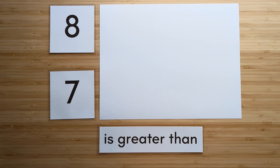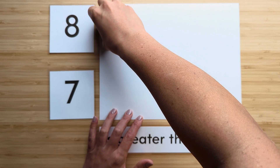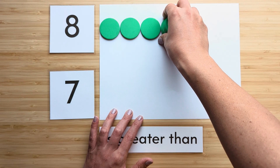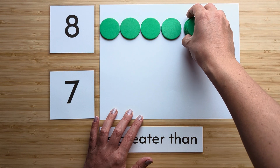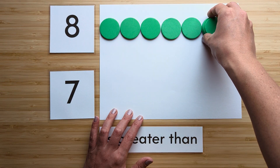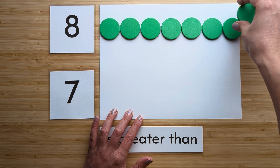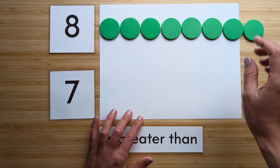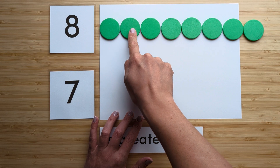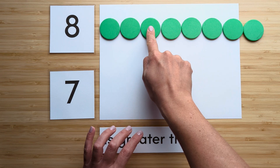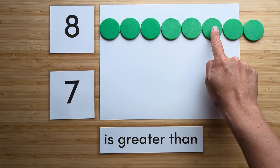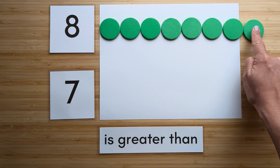Make the number eight. Point and count: one, two, three, four, five, six, seven, eight.